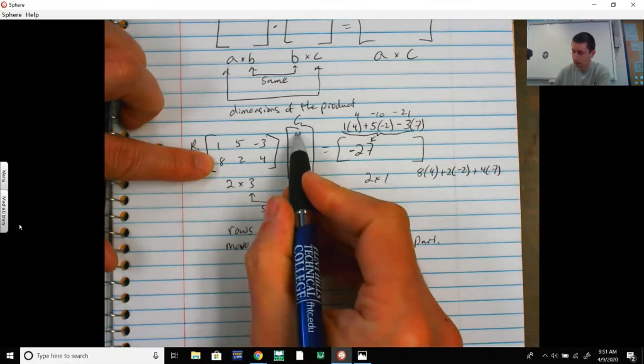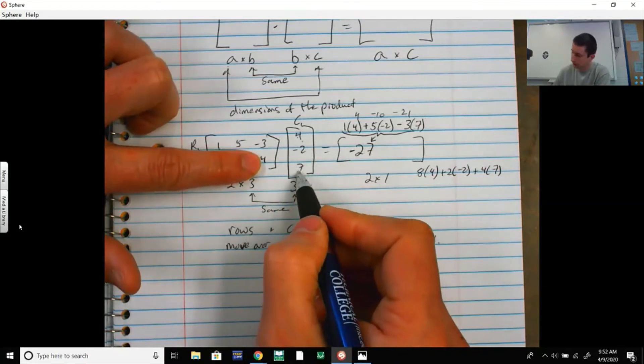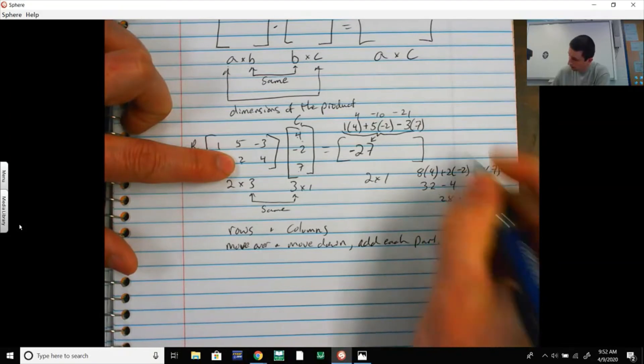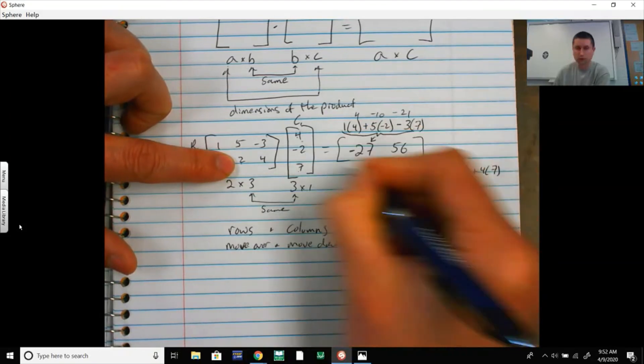8 times 4, 2 times -2, 4 times 7. We got 32 minus 4, that's 28, plus 28 is 56. That would be your solution matrix.